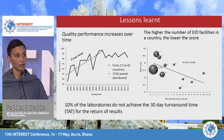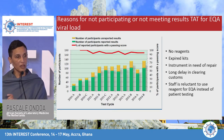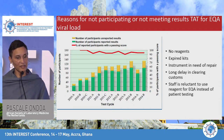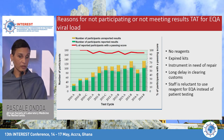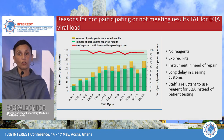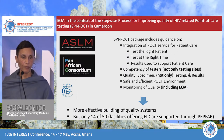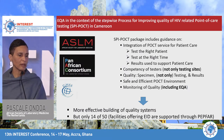For EQA and viral load, there was almost the same percentage of laboratories: regardless of how performance increased or how many more laboratories participated, there is always this 10 to 20 percent of laboratories that cannot return results. The main reasons are no reagents, expired kits, instruments needing repair, long delays in clearing customs, and sometimes staff reluctance to use reagents for EQA instead of treating patients.